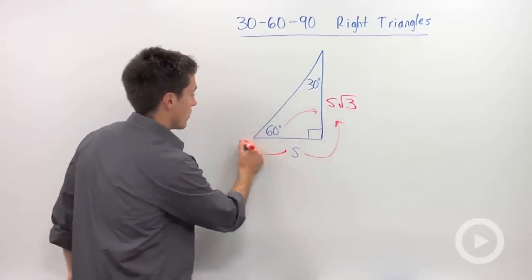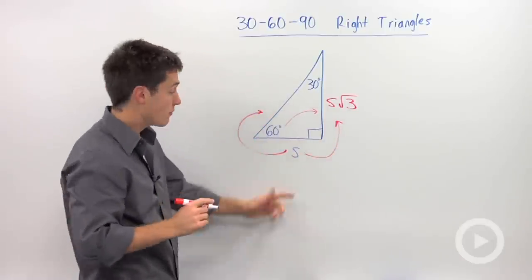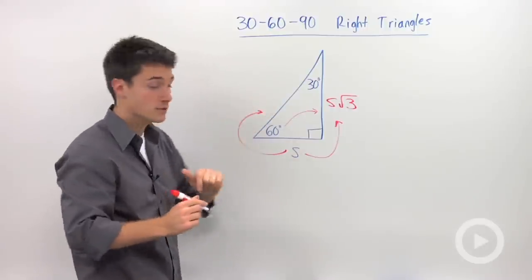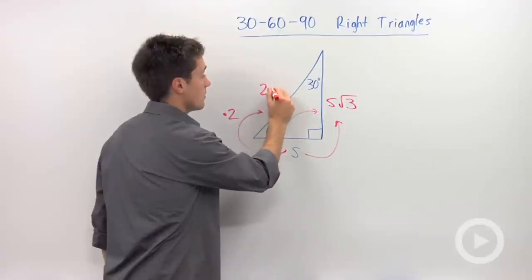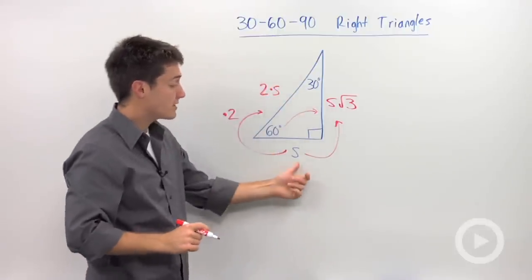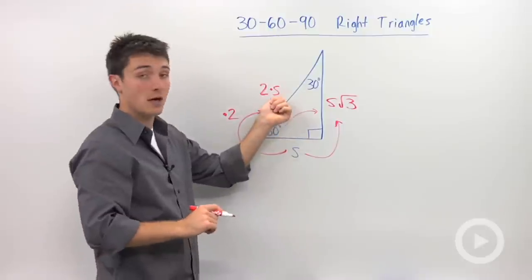Now let's say you want to find your hypotenuse. To go from your shorter leg to your hypotenuse, all you need to do is multiply by two. So this is going to be two times s. So if s is five, your hypotenuse will be ten.